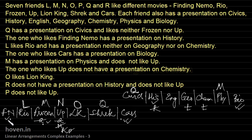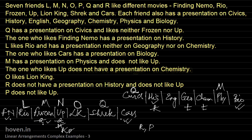Whoever comes at FN will also come at History, and whoever comes at Cars will also come at Bio. The remaining unallocated friends are R and P. R cannot come at History, so R cannot come at FN since they are paired. Therefore P is allocated to FN and R is allocated to Cars. We have now obtained a full allocation of all movies to all persons.